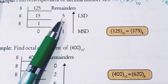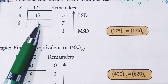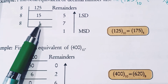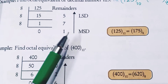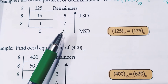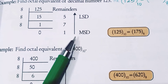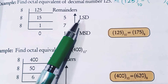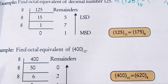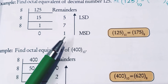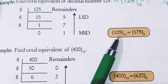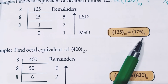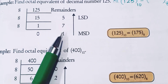125 divided by 8 gives 15 with remainder 5. Then 15 divided by 8 gives 1 with remainder 7. Then 1 divided by 8 gives 0 with remainder 1. The last remainder 1 is MSD and the first remainder 5 is LSD. Reading from bottom to top, the answer is 125 base 10 equals 175 base 8.